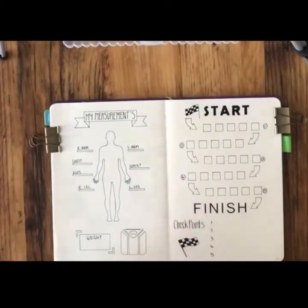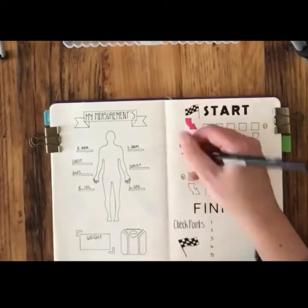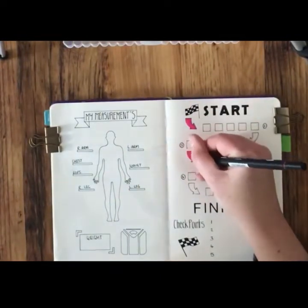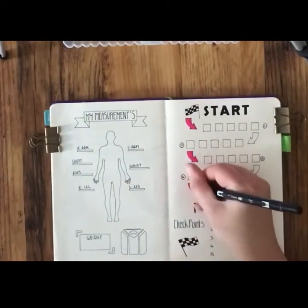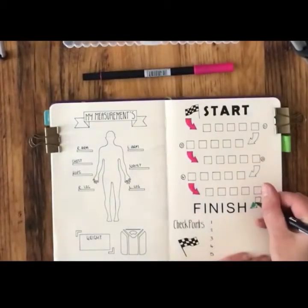Now it's time to add a bit of color. Using my Tombow Jewel Tips, I'm going for a pink and teal color theme for this spread. I'm not going to color in the boxes because we're going to color those in one by one as you lose weight.